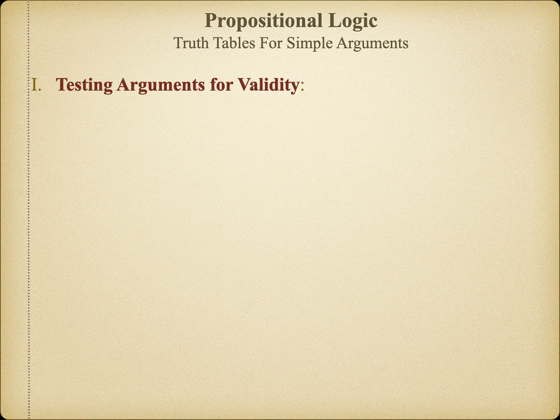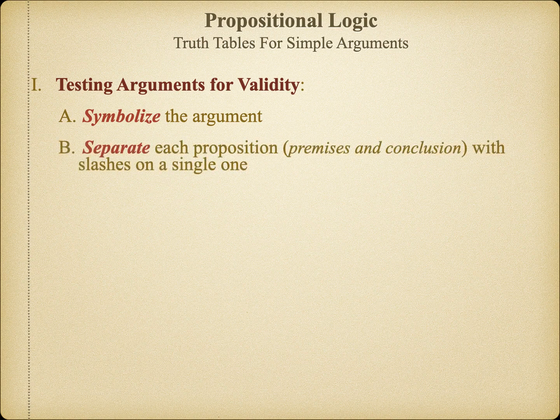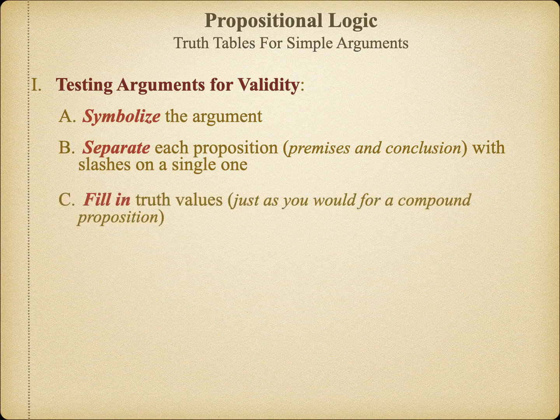There are four easy steps to creating a truth table to check the validity of an ordinary language deductive argument. First, we must symbolize the argument using the skills we've already learned. Instead of writing out the argument in standard form, for a truth table we'll write each symbolized statement out on the same line, separating each with a single forward slash to indicate premises, or a double forward slash to indicate the conclusion. Once that's done, we fill in the truth values for each individual proposition and work to identify the truth function of each statement in the argument.